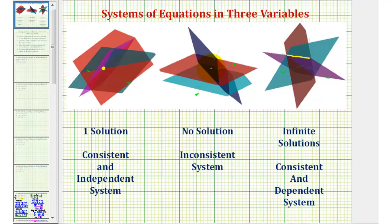The other outcome pictured here is there are no points that are on all three planes and therefore there's no solution and the system is inconsistent.